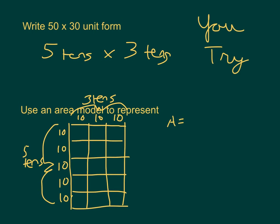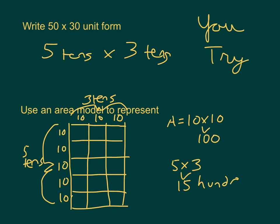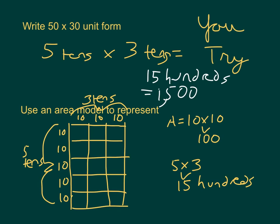Remember, the area for one square is equal to ten times ten, which is a hundred. Then we just take five times three, which is fifteen, and we're talking about fifteen hundreds. Five tens times three tens gives us fifteen hundreds. Fifteen hundreds in standard form is 1,500, which is also read as one thousand five hundred. So 50 times 30 is one thousand five hundred. This again is the area model.